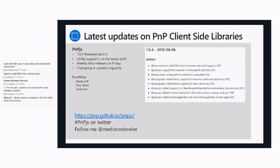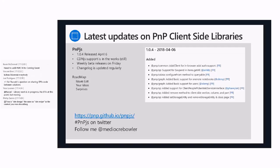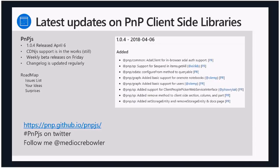The changelog is the source of information for what's updated and changed with each release. The format has a version number with release date as heading, then sections for added, fixed, or changed. This is a sample of what was added in the 1.04 release — some major stuff, some minor. I'm also linking to each pull request for each change, so you can look at that pull request to see what's changed or help debug a problem. Check out the changelog — I think it's a clearer way to communicate than blog posts, and it's right there in the repository.